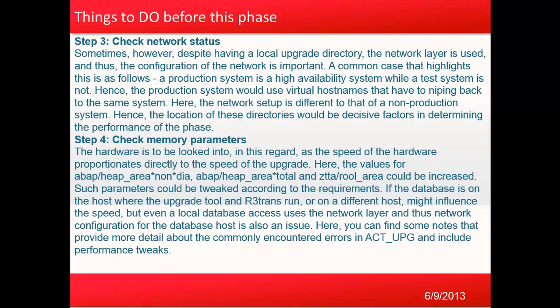Make sure that you have the upgrade directory and the trans directory locally. Then check the network status. Sometimes, despite a local upgrade directory, the network layer is used, and thus the configuration of the network is important. A common case that highlights this is a production system that is an HA system while a test system is not. Hence the production system uses a virtual hostname that maps back to the same system. Here the network setup is different from that of the non-production system, and the location of these directories would be a decisive factor defining the performance of the phase.